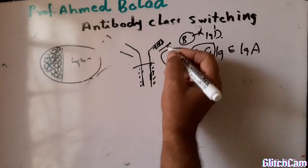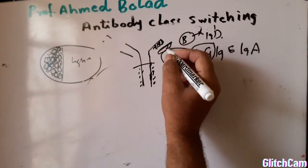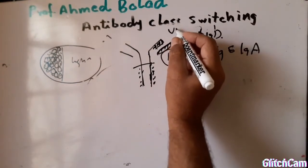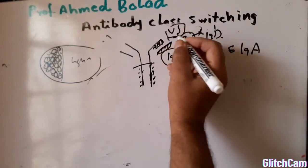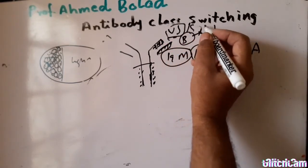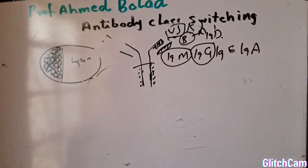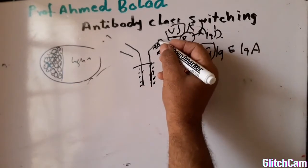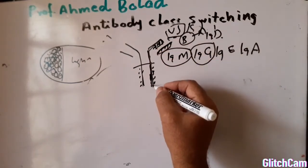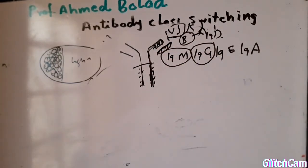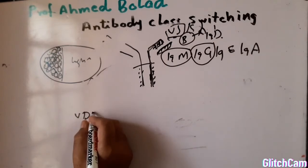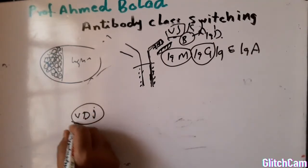As you know, the light chain is encoded by VJ segments—it could be kappa or lambda—whereas the heavy chain is encoded by VDJ.